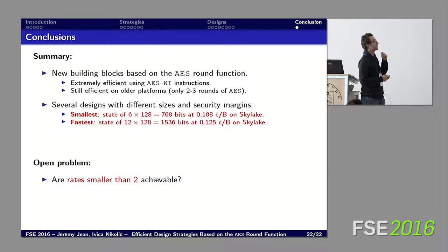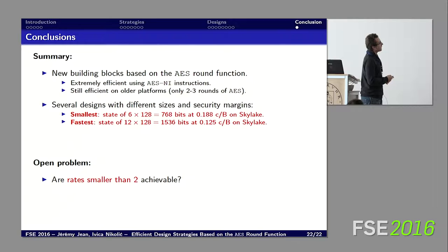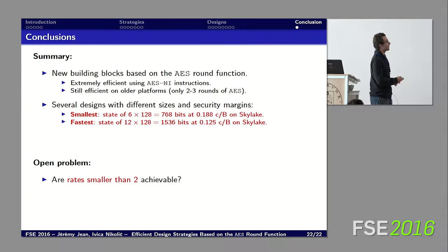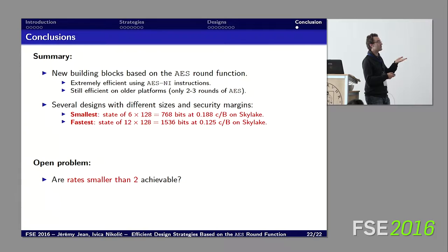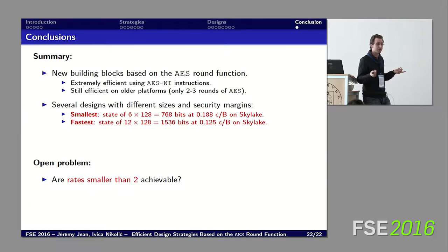To summarize: we have proposed new building blocks for constructions based on the AES round function, taking advantage of the AES-NI hardware instruction. The smallest design uses 6 internal state words and reaches 0.188 cycles per byte on Skylake; the fastest uses a state of 12 words and reaches 0.125 cycles per byte. The main open problem is whether we can go below rate 2 — for example, rate 1.5 using three AES calls to inject two message blocks — which would be extremely efficient on many platforms and is a good open challenge.